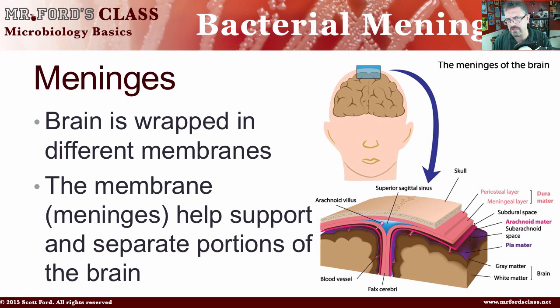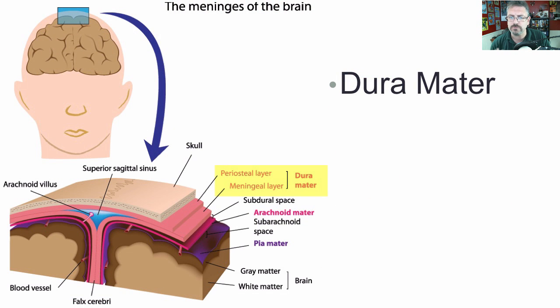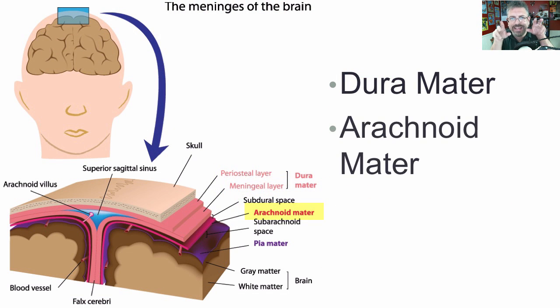There are three types of meninges you need to be aware of. We're not going to go into too much detail since this is not a video on the nervous system — I do have those on my YouTube channel, Mr. Fort's Class. But quickly: we have the dura mater, which is the 'tough mother.' We have the arachnoid mater, which relates to spiders. And then we have the pia mater, which is the 'tender mother.' You can see from the graphic where these are located, going from the most external layer inward. The dura mater is a kind of thick bag.